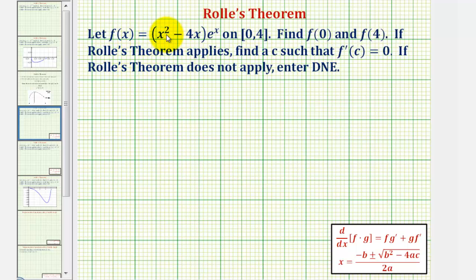Here we're given f of x equals the quantity x squared minus four x, times e to the x, on the closed interval from zero to four. We want to find f of zero and f of four, and if Rolle's theorem applies, we want to find a value of c such that f prime of c equals zero.